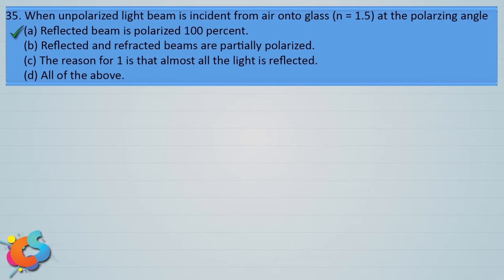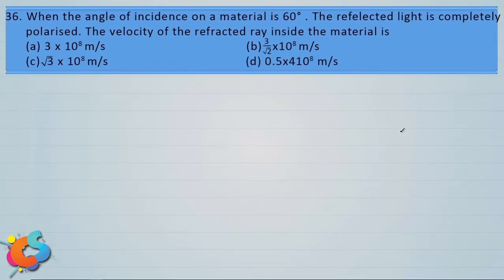When the angle of incidence equals the polarizing angle, the angle between reflected and refracted rays is 90 degrees — they are perpendicular to each other. Brewster's law states that the refractive index n is equal to the tangent of the polarizing angle: n = tan(ip) or tan(θp). So option a is the correct answer.